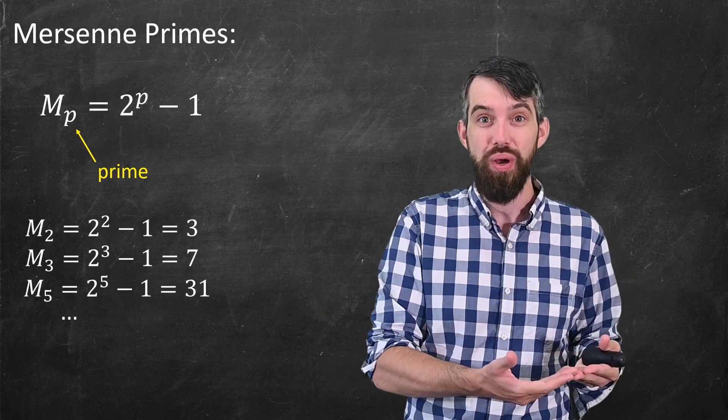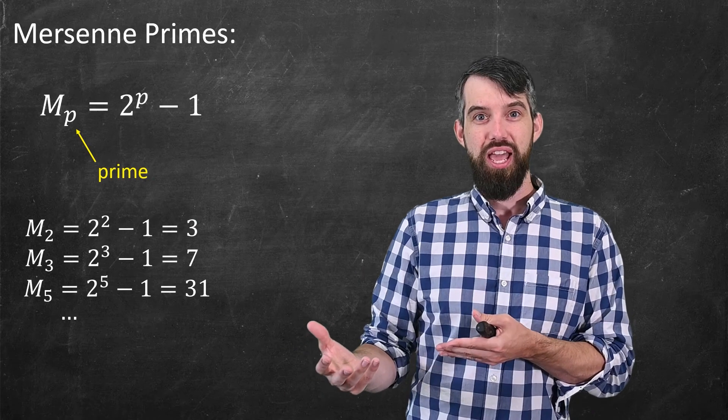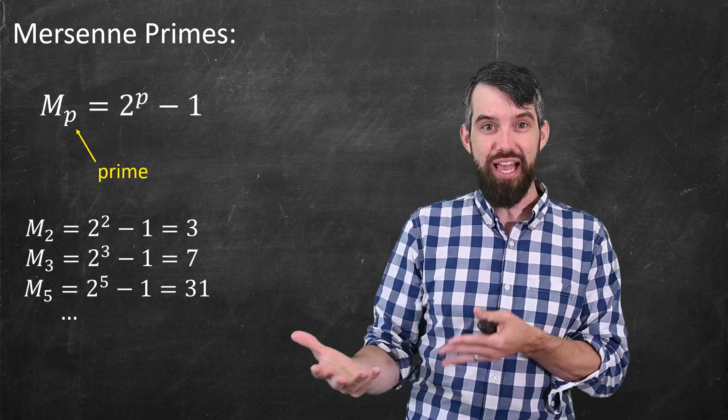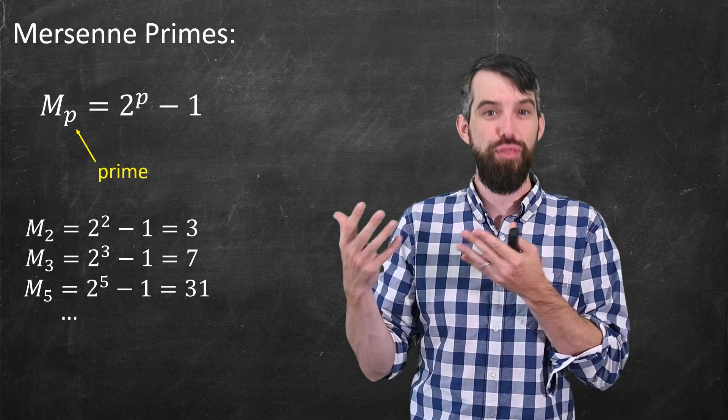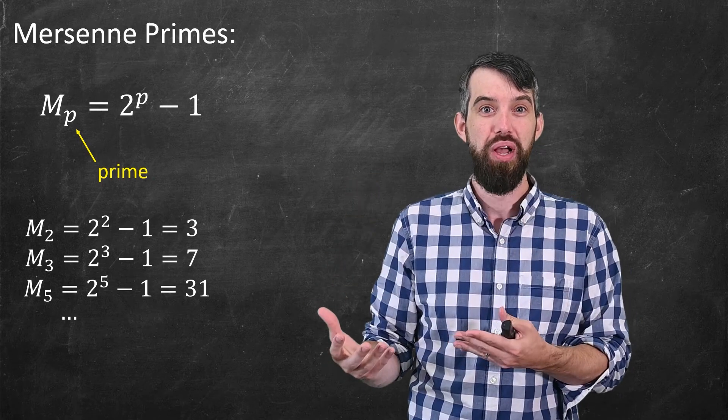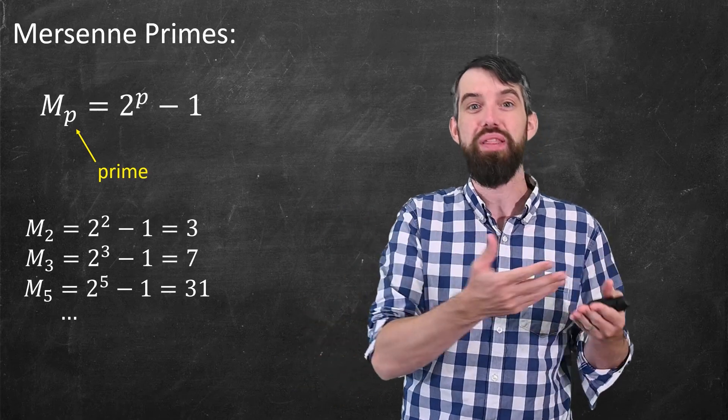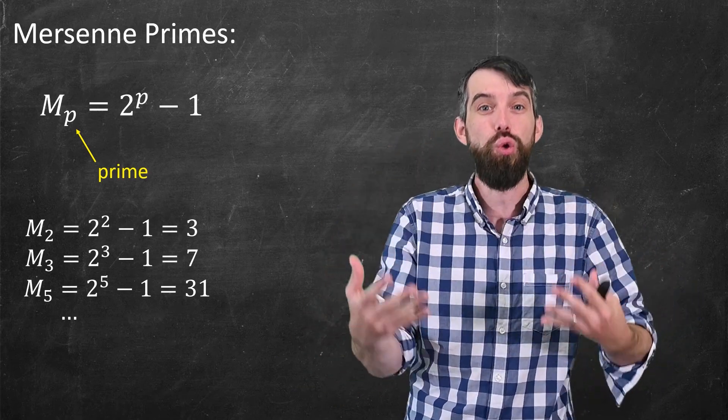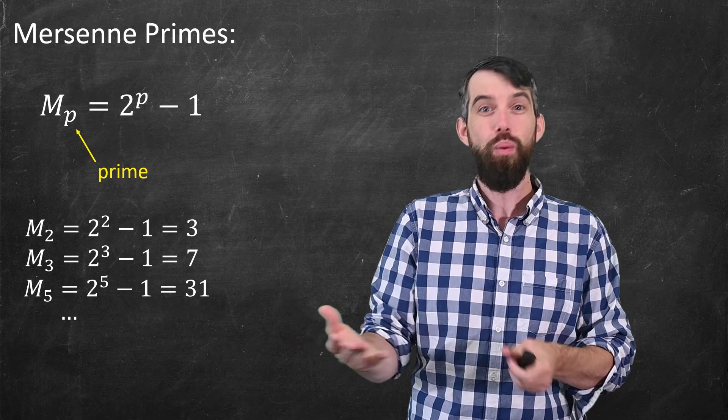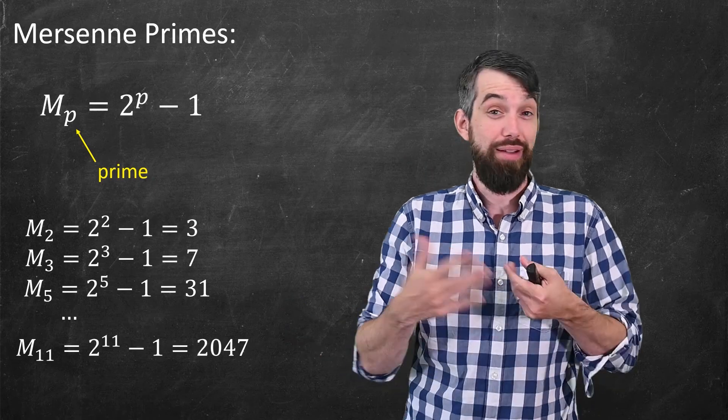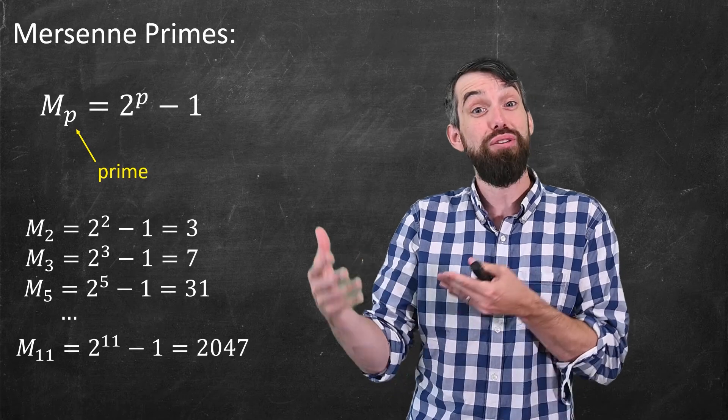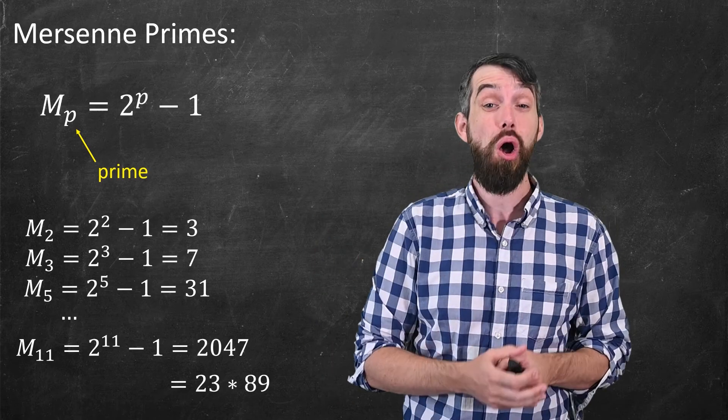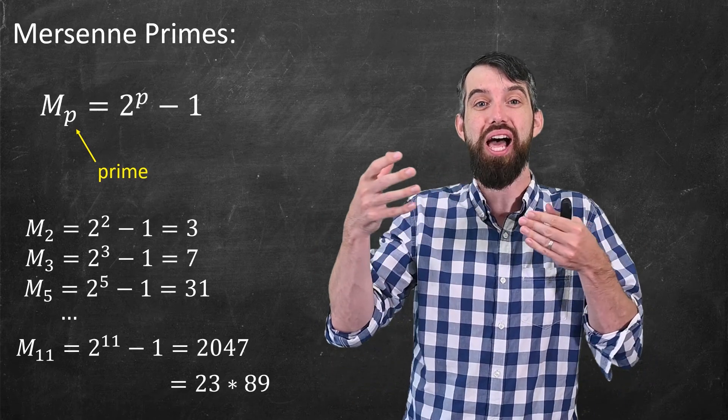So if I plug in p equal to 2, 2 squared minus 1 is 3. If I plug in p equal to 3, I get 7. If I plug in p equal to 5, I get 31. And 3 and 7 and 31 are all prime numbers. So these Mersenne numbers that I get out from inputting these different primes give me a new larger prime. But what happens if I go to M11? 11 is a prime number, yet 2 to the 11 minus 1 is 2047, and that is a composite number. It is 23 times 89.